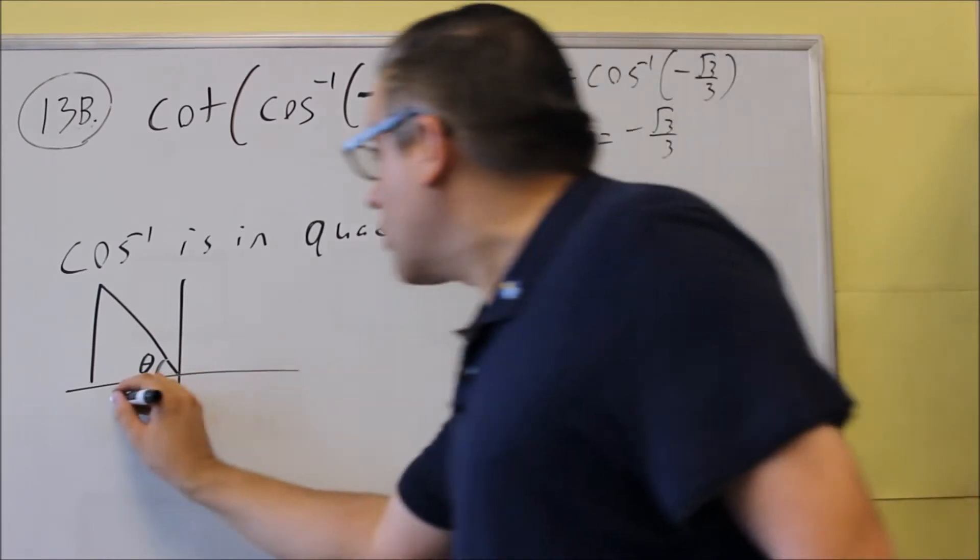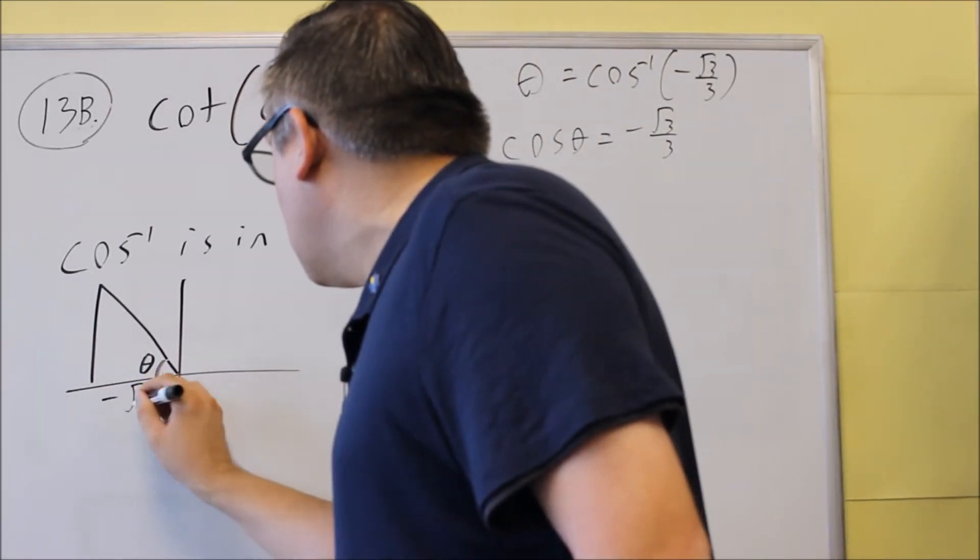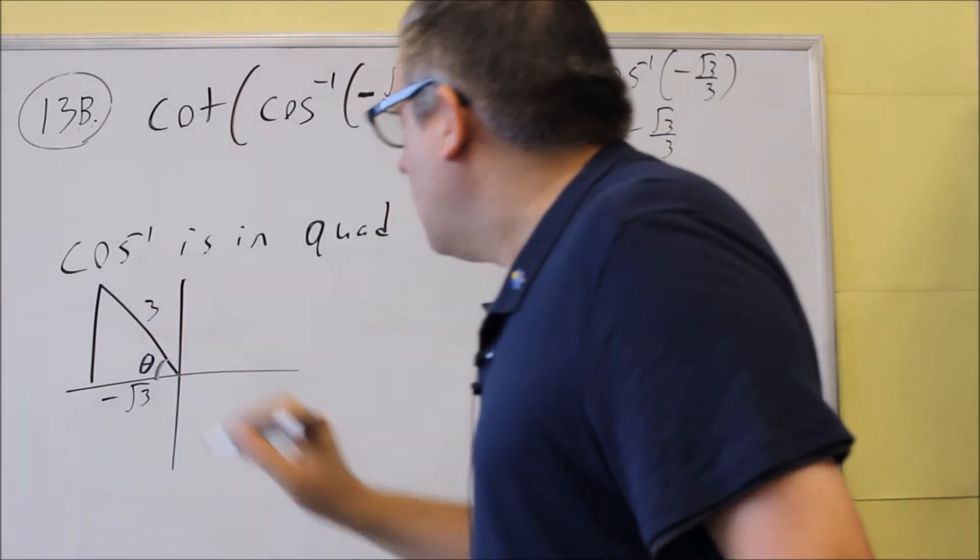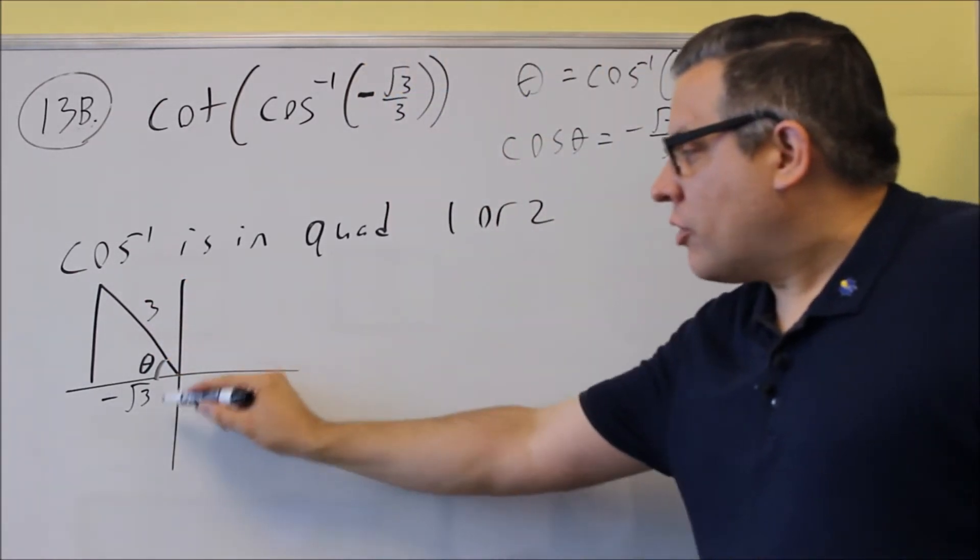So, you're going to have negative square root of 3. This is, again, adjacent over hypotenuse. So, there we have negative square root of 3 and 3.